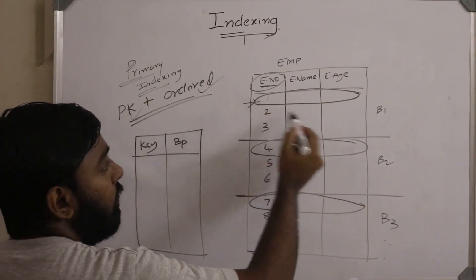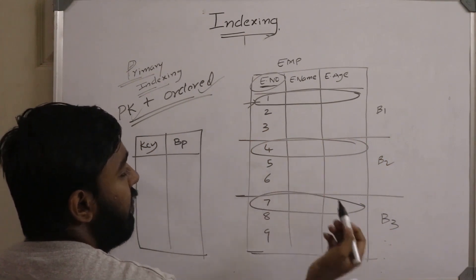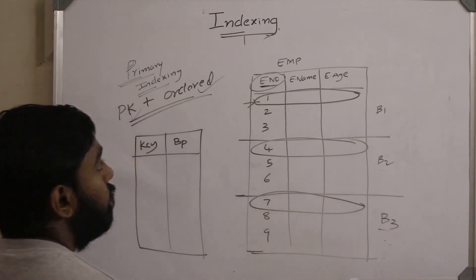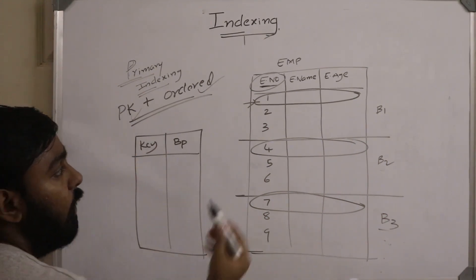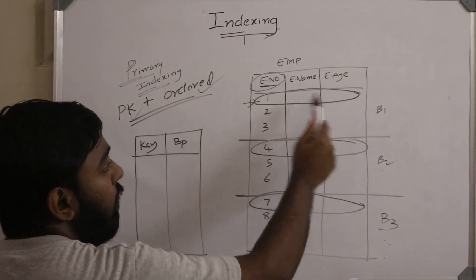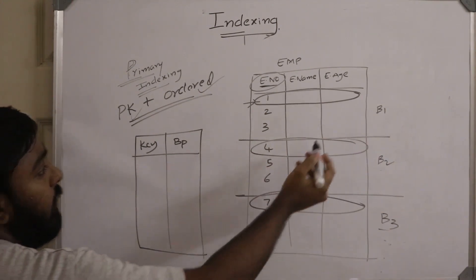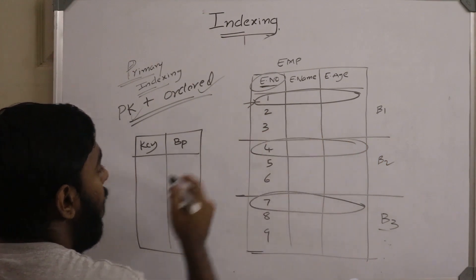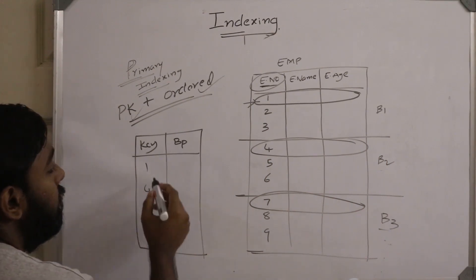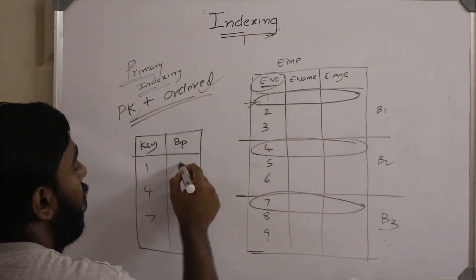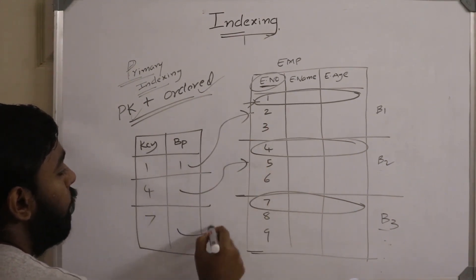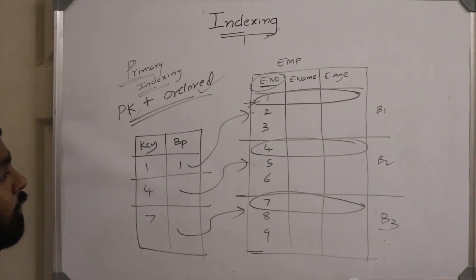Record number 1 from block B1 is the block anchor; similarly, records 4 and 7 are block anchors for blocks B2 and B3. So in primary indexing we create an index only for the first record of every block. From block 1 the anchor is 1, from block 2 we have 4, from block 3 we have 7. The first entry points to block 1, the second to block 2, and the third to block 3.